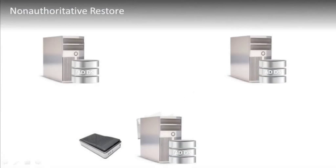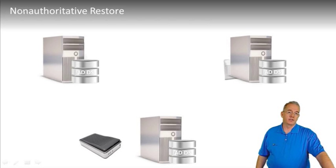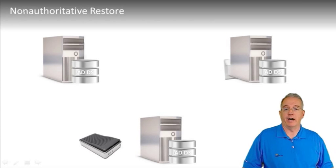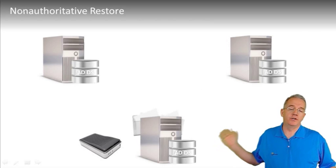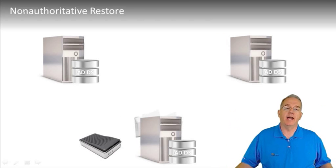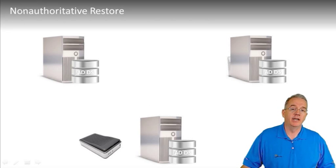So you back up your system state, then the unthinkable happens and you need to restore Active Directory — maybe you went in and deleted something. There are two different types of restoration: authoritative and non-authoritative. When you do a non-authoritative restore, the restored machine will then replicate any changes from the other domain controllers. This is useful if a domain controller fell over — hard drive caught on fire — you restore from backup, it comes back online, contacts the other domain controllers, and all the changes are replicated down to it.